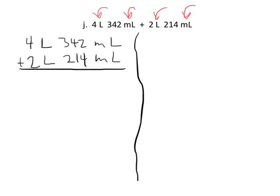So you've got, let's see, right here you've got 2 plus 4 is 6, 4 plus 1 is 5, 3 plus 2 is 5, so that's 556 milliliters. And then over here we've got 4 plus 2 liters, so that's going to be 6 liters. And so that's our final answer: 6 liters 556 milliliters.